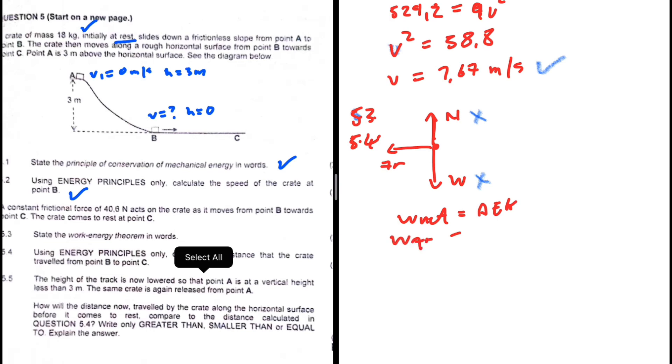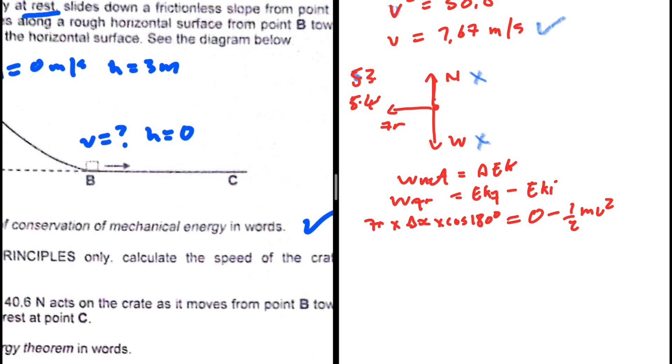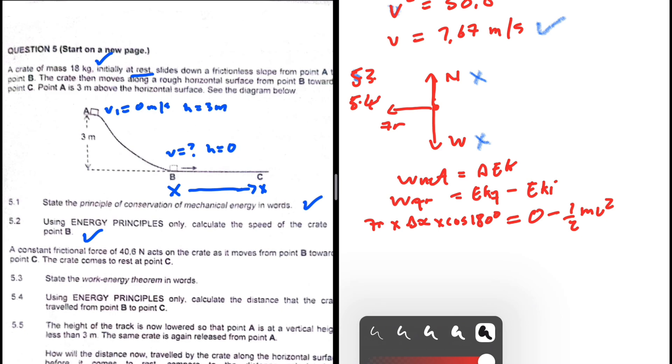Work net is just going to be the work done by the frictional force, equal to the final kinetic energy minus the initial kinetic energy. Work done by the frictional force will be fr multiplied by delta x, multiplied by cosine of 180 degrees. This is going to equal the final kinetic energy - well it comes to rest so we have zero - minus the initial kinetic energy, half mv squared, the initial at B, because now we're considering the motion from point B to point C.